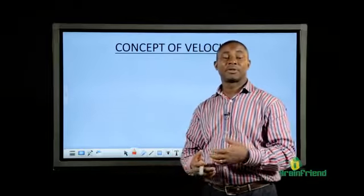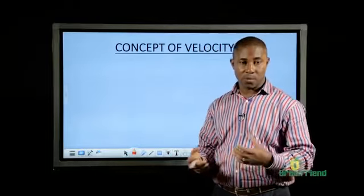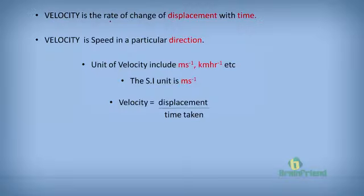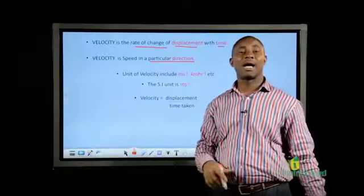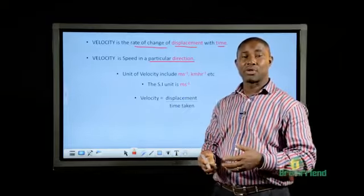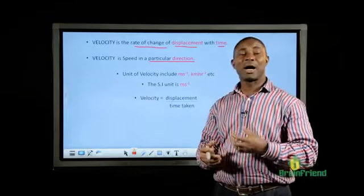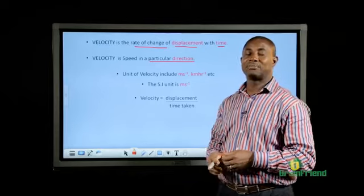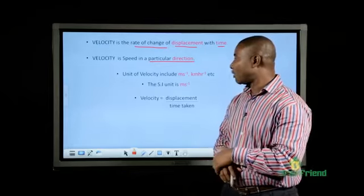Let's now look at the concept of velocity. Velocity is the rate of change of displacement with time. When displacement is measured against time, the rate of change between them gives us velocity. So velocity is actually speed but in a particular direction. Speed and velocity have the same magnitude, but velocity is also defined by the direction of the motion.